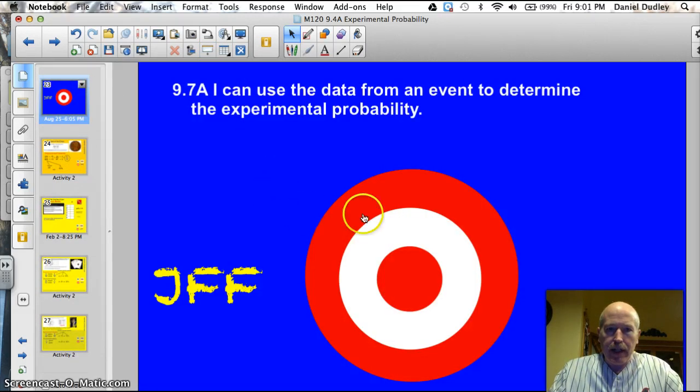Officially tonight, it's 9.7a. I can use the data from an event to determine the experimental probability. Sounds complicated? Easy target. You're going to like it. Let's do this thing.